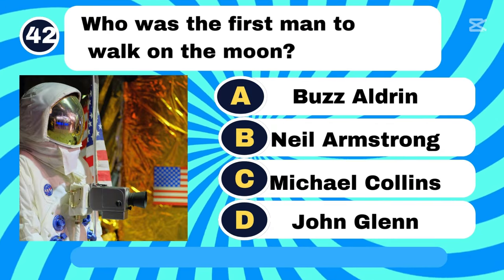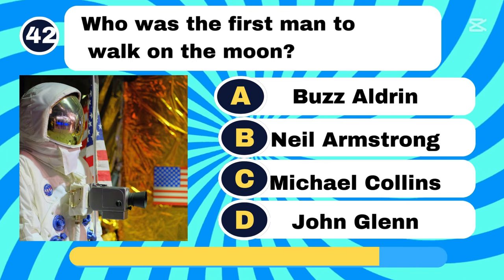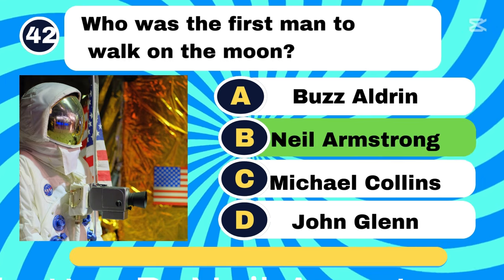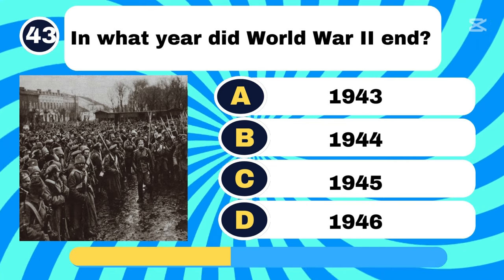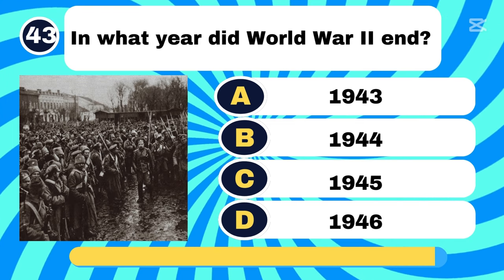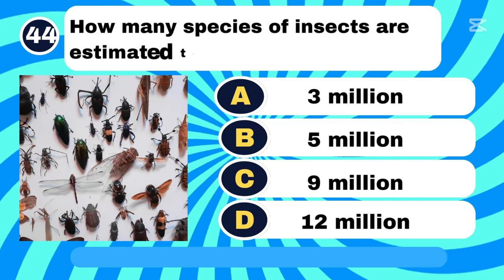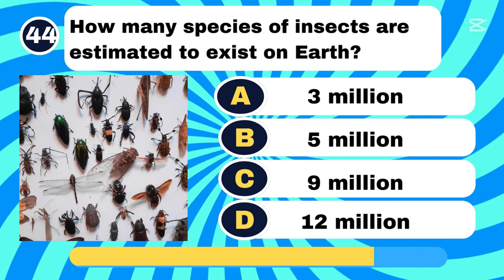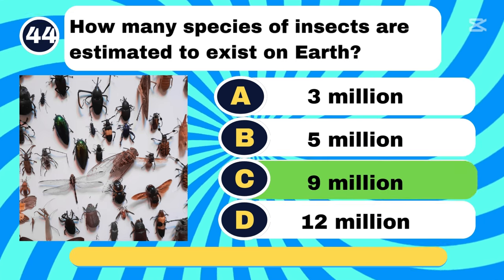Who was the first man to walk on the moon? Letter B, Neil Armstrong. In what year did World War II end? Letter C, 1945. How many species of insects are estimated to exist on Earth? Letter C, 9,000,000.